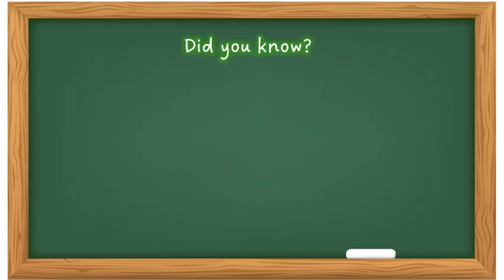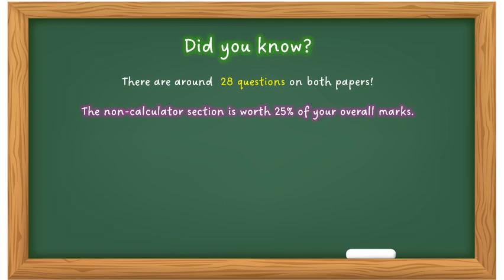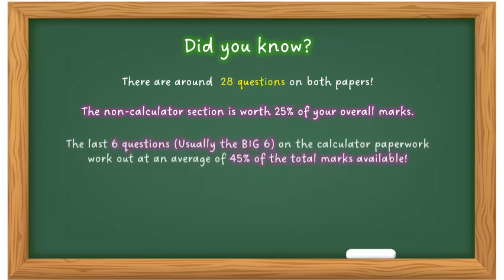Now did you know there are around 28 questions on both papers, your non-calculator and calculator? The non-calculator section is worth 25% of your overall marks. That's why it's one of the big six. Because if you got all your non-calculator skills, your basic skills you learned at primary school, if you get them off to a tee, you're almost halfway to pass an exam before you even start the calculator paper. So invest time in doing your basics.